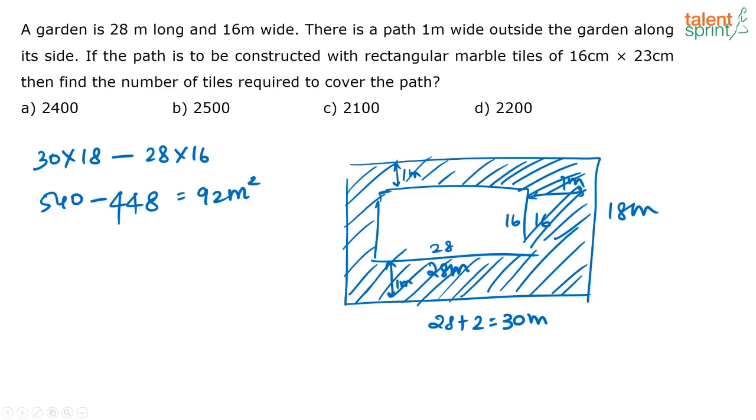So the area that you have to tile now is 98 meter squared. You have to find out the area of this shaded region and tile this shaded region. Now I know the dimension of each marble which is given in terms of centimeters. So in terms of meters, what will be the dimension of one marble?